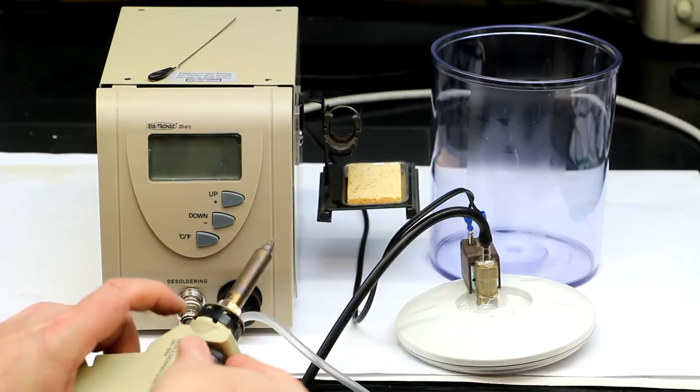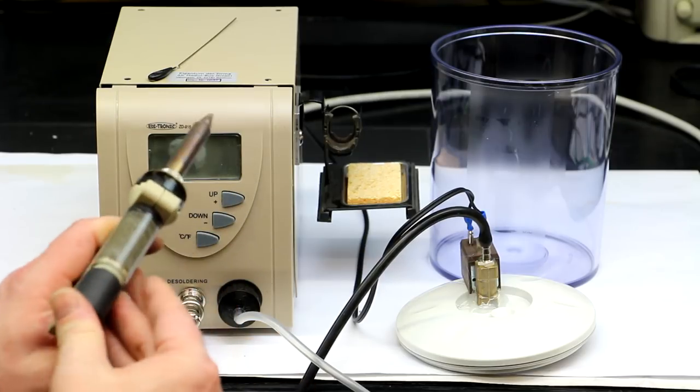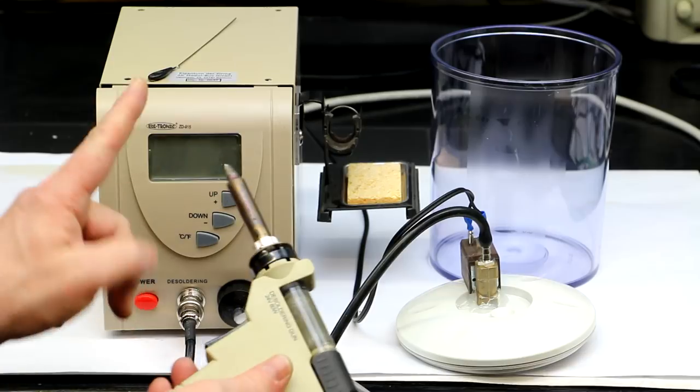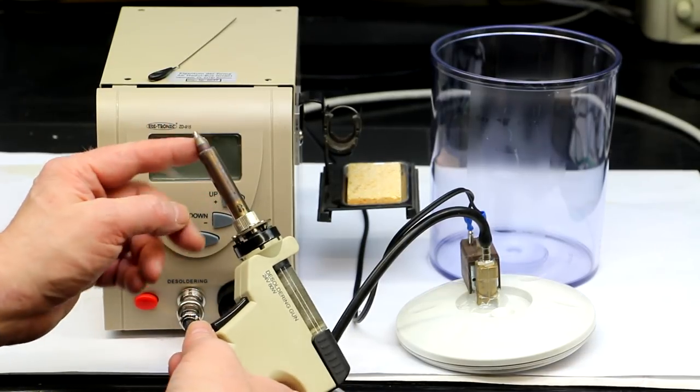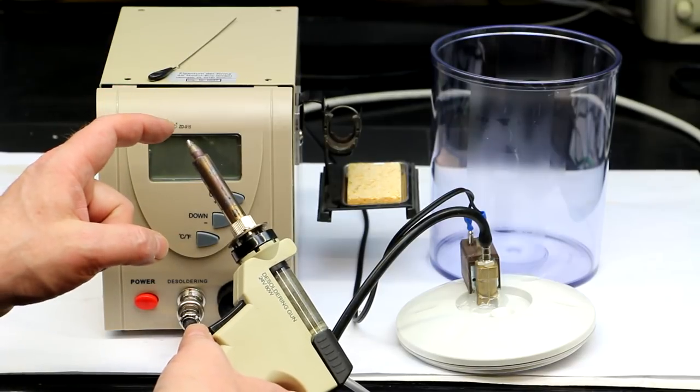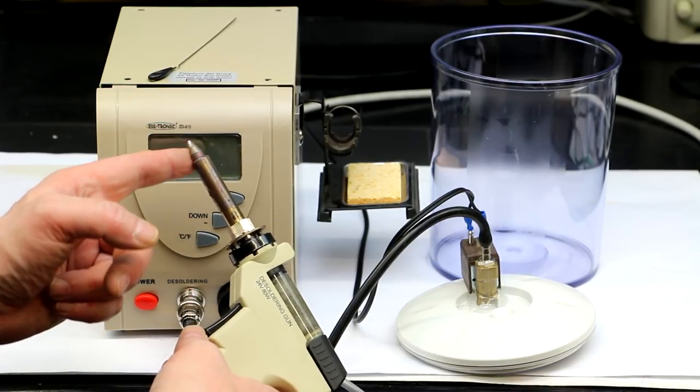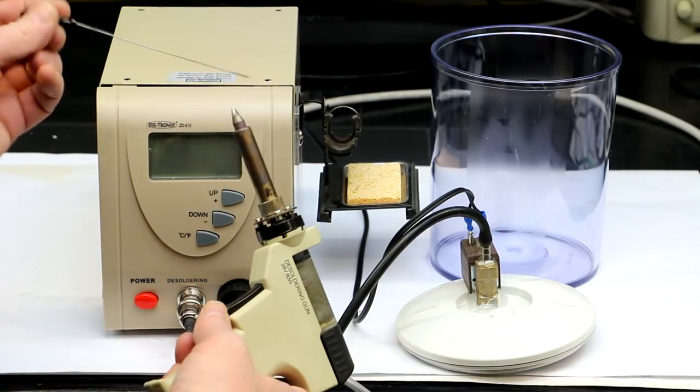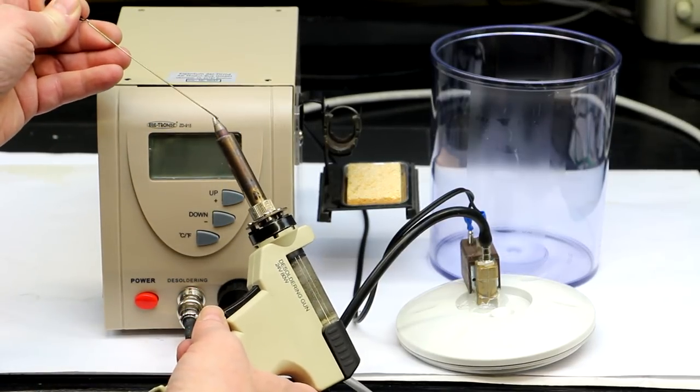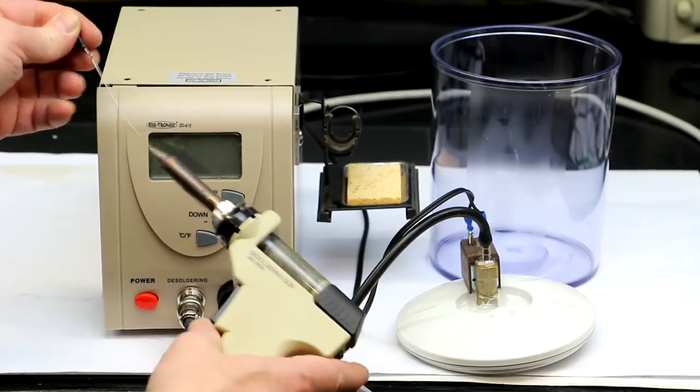And what sometimes also can happen is, if the heater element, if the solder tip or desolder tip is still not hot enough, some of the solder can solidify again inside. And therefore are these little things where you can clean the channel, the internal vacuum channel.